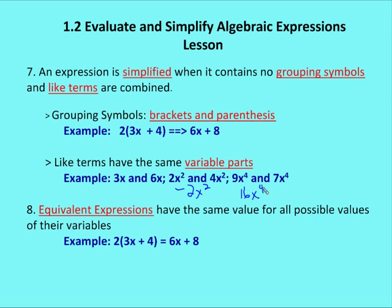Now, equivalent expressions are basically the same expressions on either side of an equal sign. Equivalent expressions have the same value for all possible values of their variables. An example would be 2 times 3x plus 4 is equal to 6x plus 8, which we demonstrated in the grouping symbols example above. So if I were to simplify the expression on the left, I would end up with 6x plus 8. And 6x plus 8 is equal to 6x plus 8. So I have two equivalent expressions. Regardless of what I plug in for x, when I evaluate that expression, I will come up with the same value on both sides of the equation.